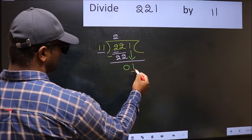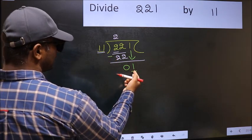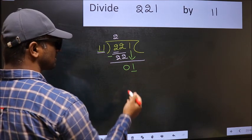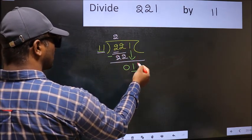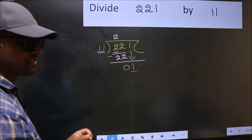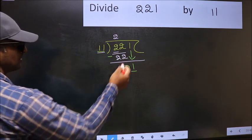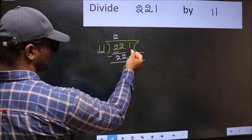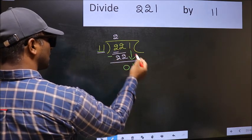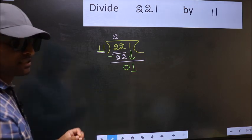Here we have 1 and here 11. 1 is smaller than 11. So, what many do is, they directly put dot and take 0. Which is wrong. Why is it wrong? Because, just now you brought this number down. And in the same step, you want to put dot and take 0. Which is wrong.